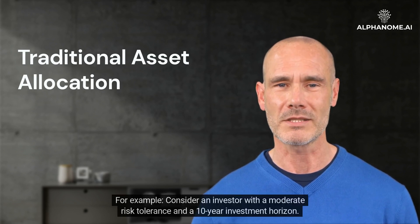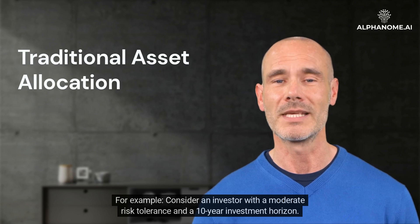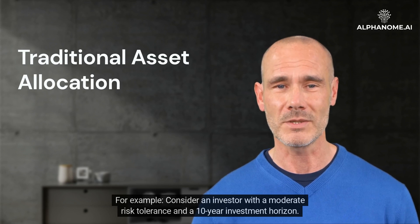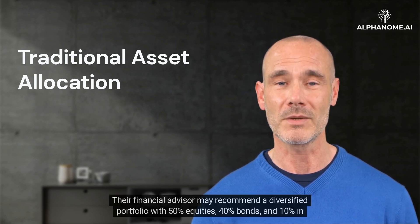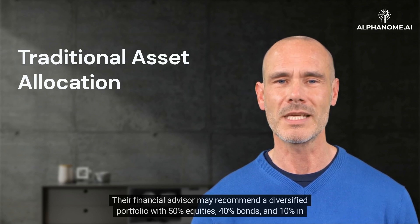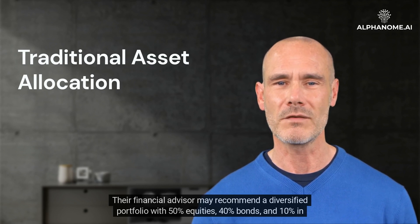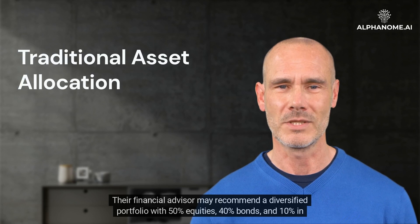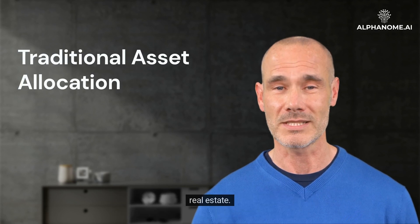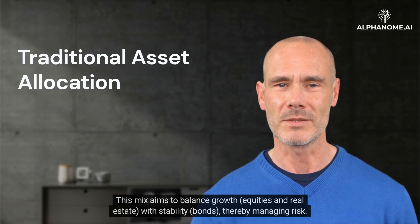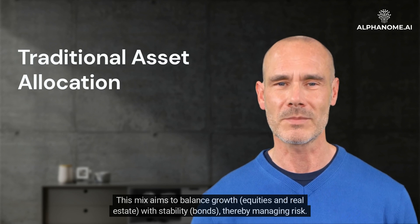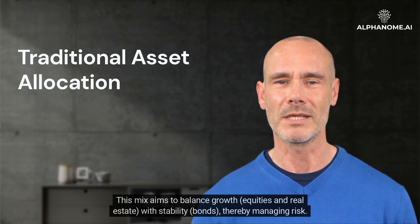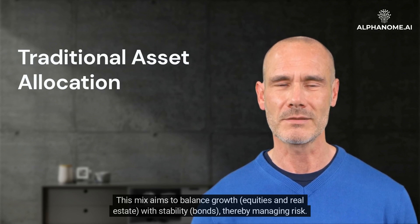For example, consider an investor with a moderate risk tolerance and a 10-year investment horizon. Their financial advisor may recommend a diversified portfolio with 50% equities, 40% bonds, and 10% in real estate. This mix aims to balance growth — equities and real estate — with stability — bonds — thereby managing risk.